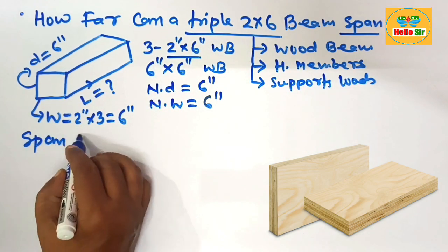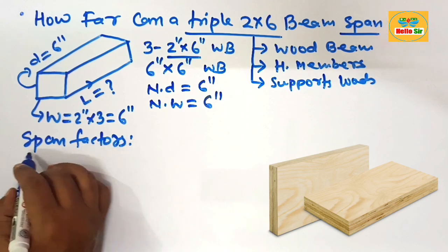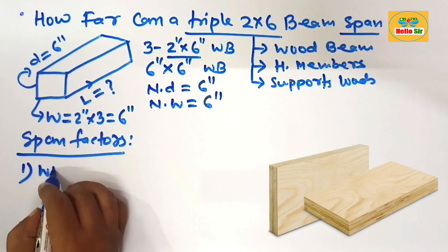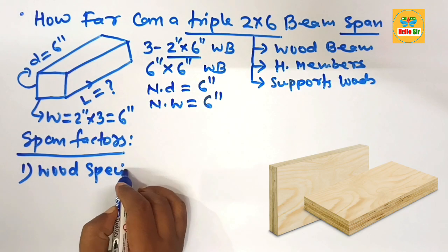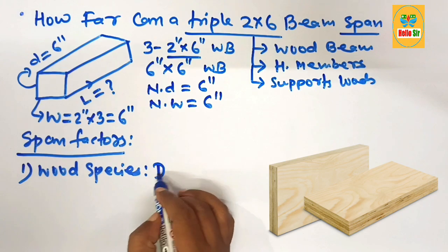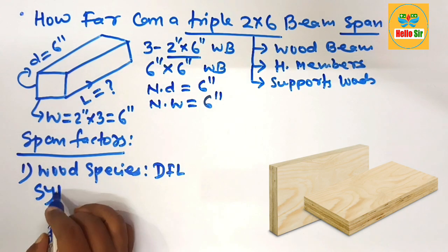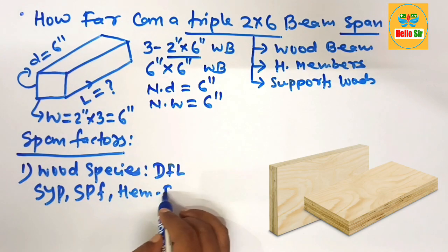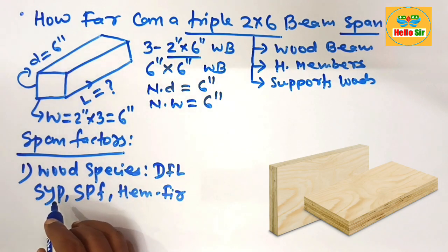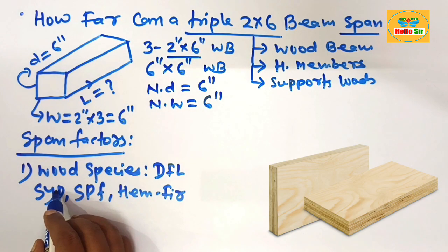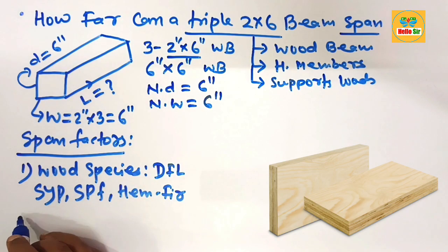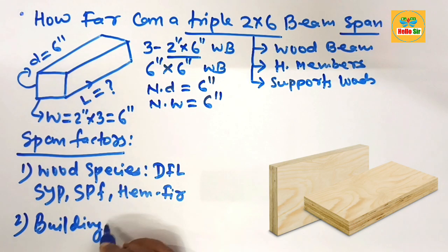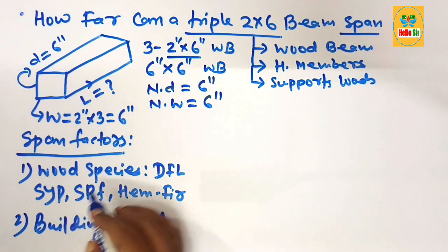There are several factors that determine the span length of a triple 2 by 6 beam. The first factor is wood species. There are different kinds of wood species such as Douglas Fir-Larch (DFL), Southern Yellow Pine (SYP), SPF, and Hem-Fir. Southern Yellow Pine is the strongest wood species and can span farther compared to other species.